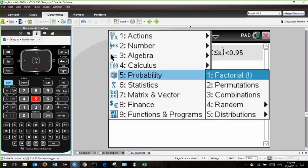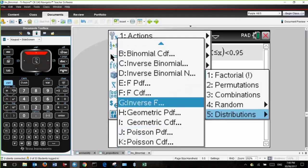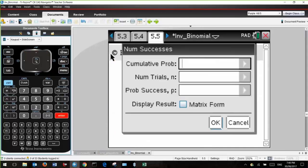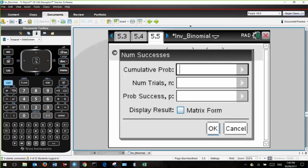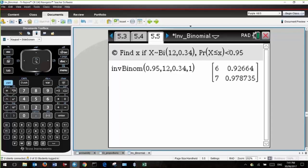Let's have a look at the command. Menu, probability which is 5, distributions which is 5, and this time it's inverse binomial with no N. What it's asking for is the cumulative probability, so that's 0.95. Tab down, the number of trials is 12. Tab, the probability of success is 0.34, and it's always useful to have the matrix because then you can see what's going on. We need to select the value which is less than 0.95. So 6 is less than 0.95. 7 is above 0.95. So X has to equal 6.